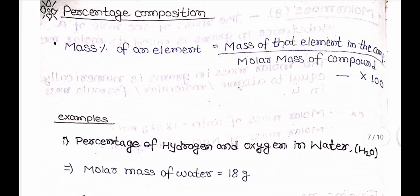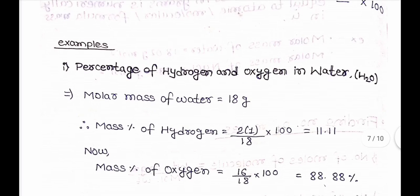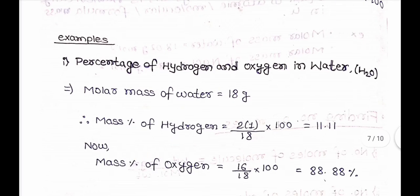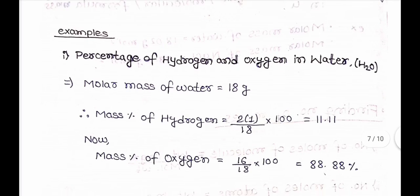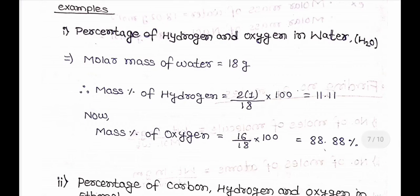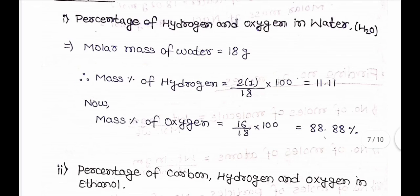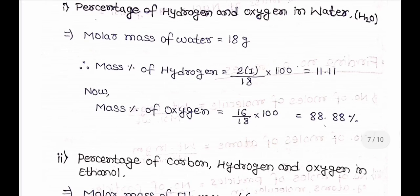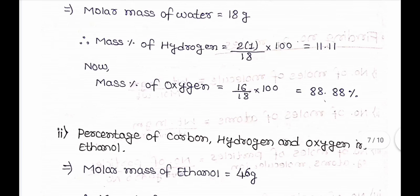Now, Percentage Composition. Mass percent of element = (mass of the element in the compound ÷ molar mass of compound) × 100. Example: percentage of hydrogen and oxygen in water. Molar mass of water = 18g. Mass percentage of hydrogen = (2×1 ÷ 18) × 100 = 11.11%. Mass percentage of oxygen = (16 ÷ 18) × 100 = 88.88%.